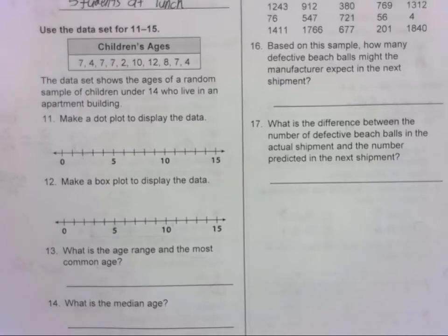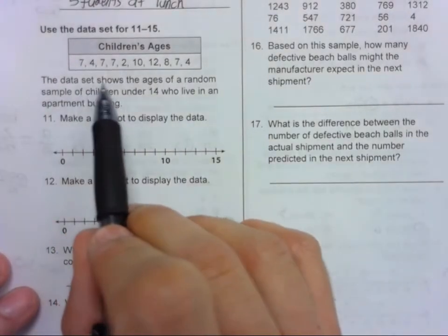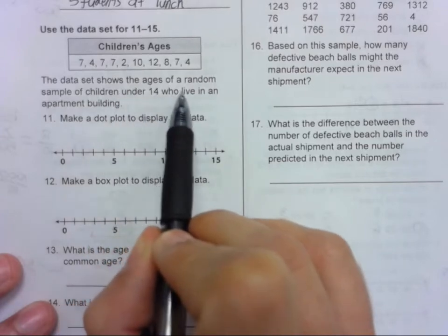Let's look at problems 11 through 15 on the Module 10 Study Guide. Make a dot plot to display the data. So what's going on here? The data set shows the ages of a random sample of children under 14 who live in an apartment building.